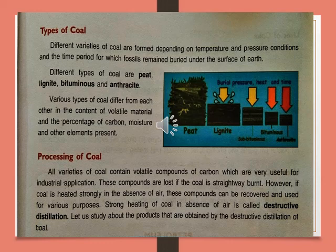The different types of coal are: first stage is peat, second is lignite, third is bituminous, and the final stage is anthracite — as we have seen in the previous pictures. Various types of coal differ from each other in the content of volatile material and the percentage of carbon, moisture, and other elements present in them. All four types — peat, lignite, bituminous, and anthracite — are different from each other in their chemical properties because their contents are different.